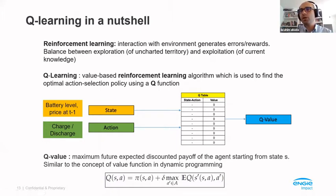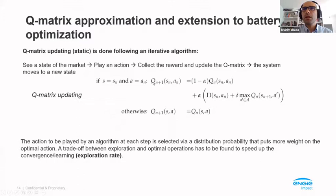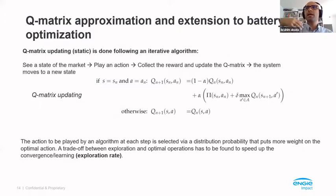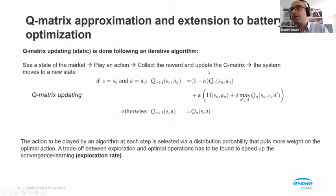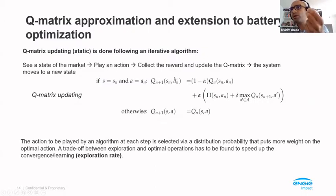The main question is how you fill this table. The algorithm is iterative — there is an interaction between all the algorithms and the system. Each algorithm sees a state of the market, plays an action according to a rule, and once the action is played, observes the reward, updates its Q-matrix, and then the system moves to a new state. Then we iterate: new state observed, play a new action, collect new reward, update Q-matrix, and the system moves. There is a continuous iteration between the algorithms and the system.